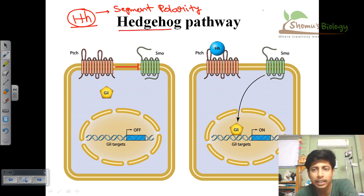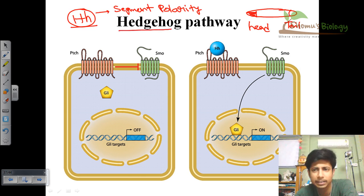This segment polarity protein turns on a certain signaling cascade which ultimately helps designate which is going to be the head and which is going to be the opposite end of the body. It also helps in segmenting the larval body properly.